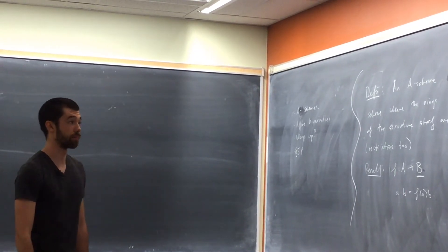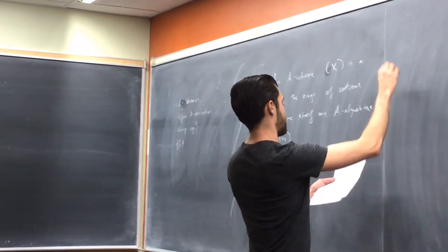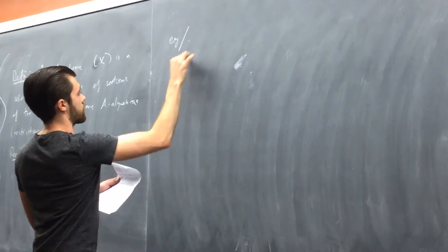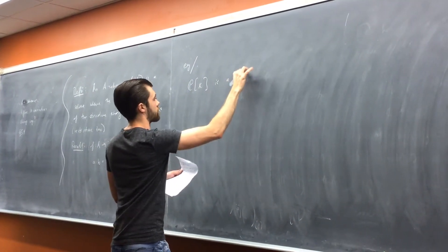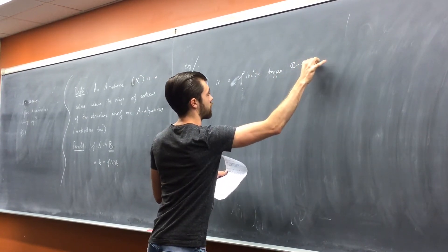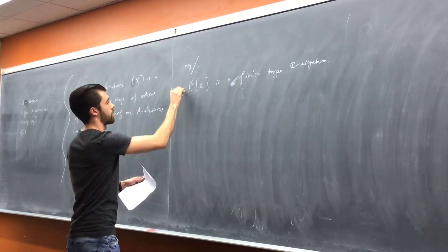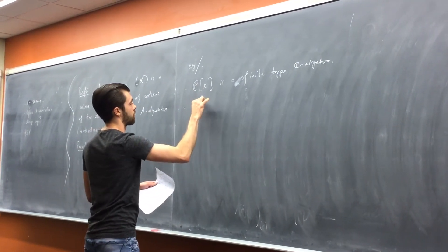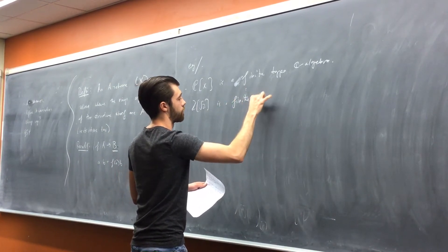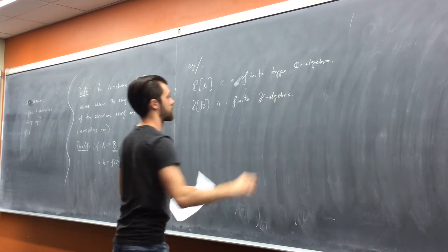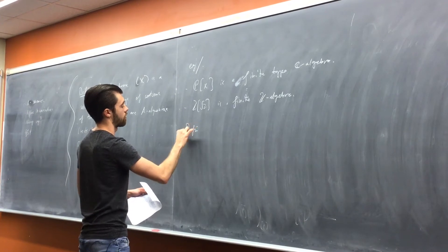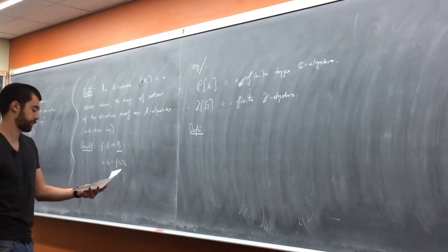So with that in mind, definition on the next board — maybe I'll give an example. C[x] is a finite type C-algebra, but it's not finite. Z adjoined root 2 is finite.